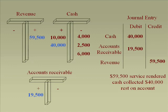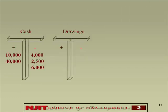Transaction seven: the owner withdrew $30,000 for personal use — that's called drawings. Two accounts impacted: cash and drawings. Drawings is plus minus. Cash goes down $30,000. Drawings increase $30,000. So cash minus $30,000, drawings plus $30,000. The journal entry shows drawings as debit, cash as credit.